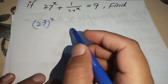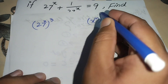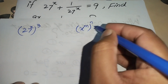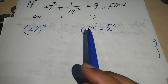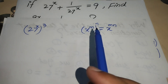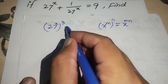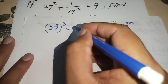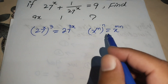To simplify 27^x whole power 3, we use the exponent law: (x^m)^n = x^(mn), meaning when you have a power raised to another power, the exponents are multiplied. Applying this law, 27^x whole power 3 becomes 27^(3x).